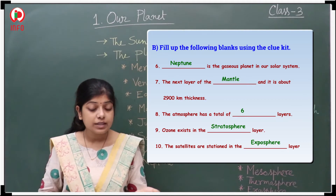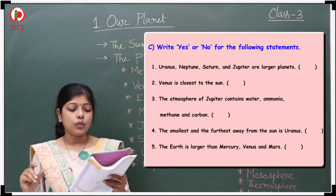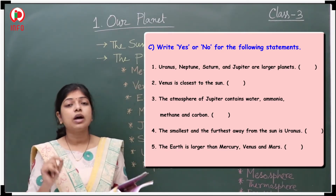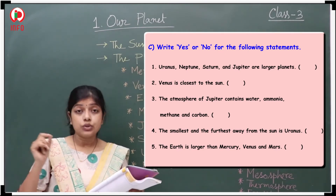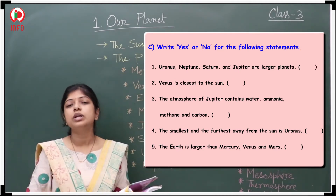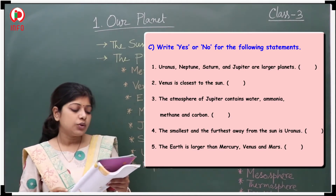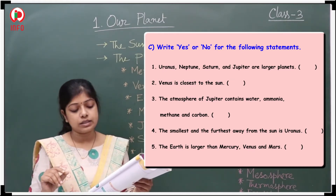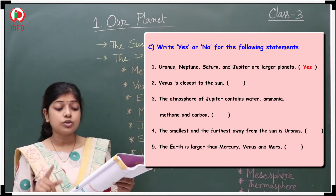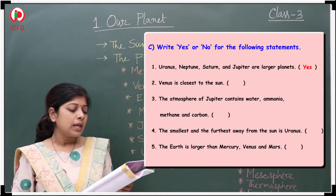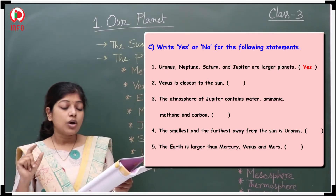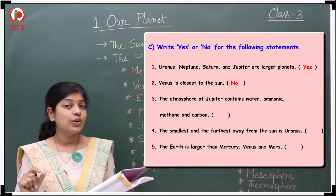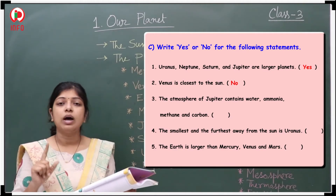Section C: Write yes or no for the following statements. First: Uranus, Neptune, Saturn, and Jupiter are larger planets — Yes. Second: Venus is closest to the sun — No, that is false.